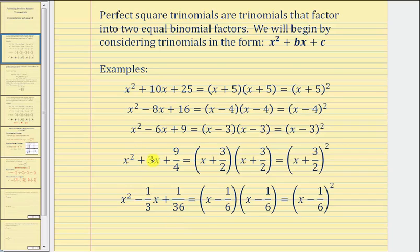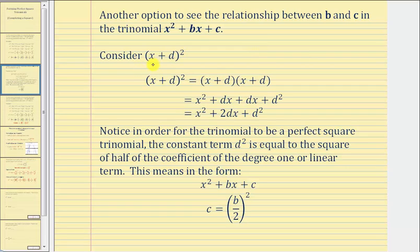The main goal of this lesson is to determine what the value of c, or the constant term, would have to be in order to form a perfect squared trinomial. To do this, we want to develop a relationship between the value of b and the value of c. One way to approach this is to consider the product of the quantity x plus d squared.